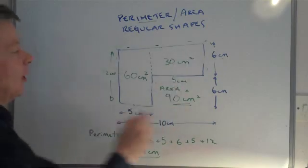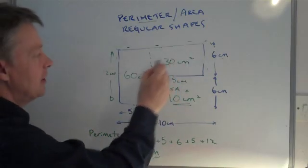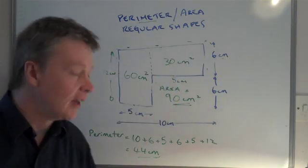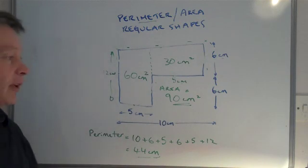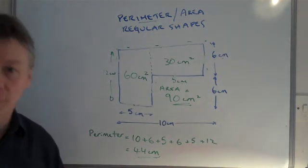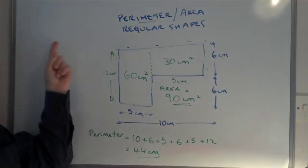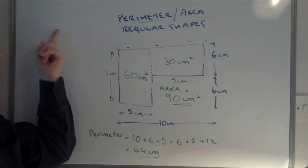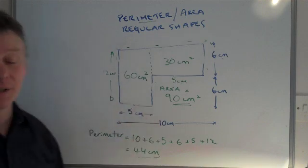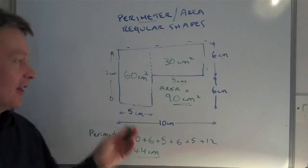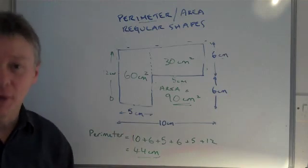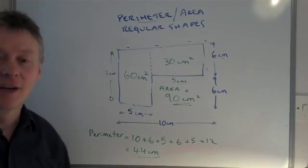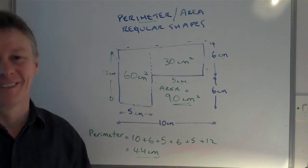So, perimeter is all the way around. Area is the unit that the shape is made up of. And if you want to practise, have a look at the website — masterapp.co.uk — and you'll be able to download a couple of questions and have a go, and make sure that you'll be OK with working out the perimeter and area of a regular shape.